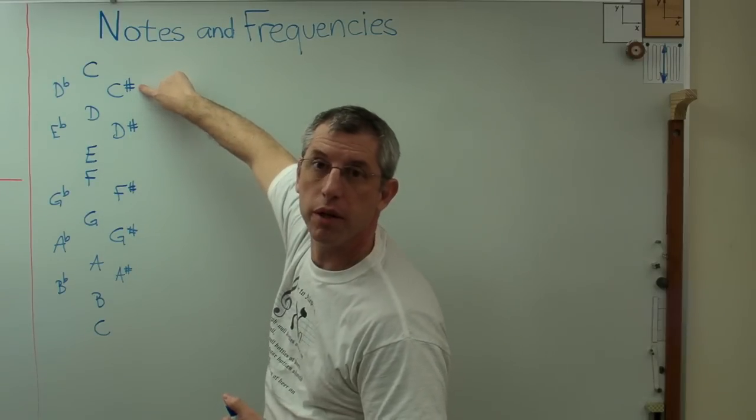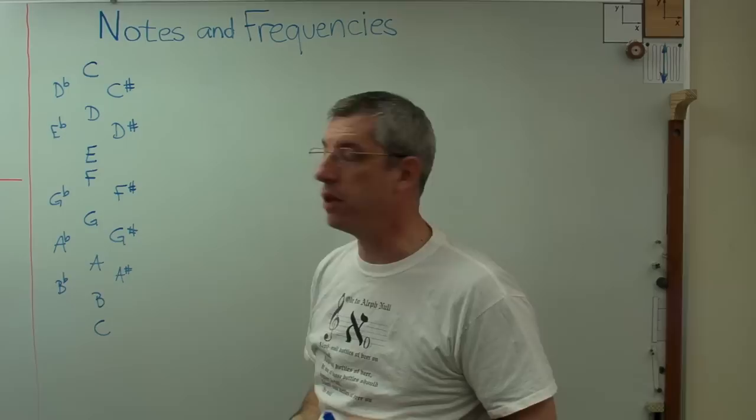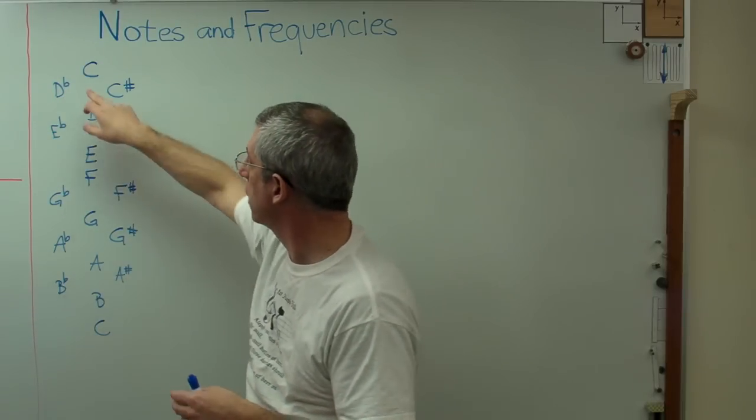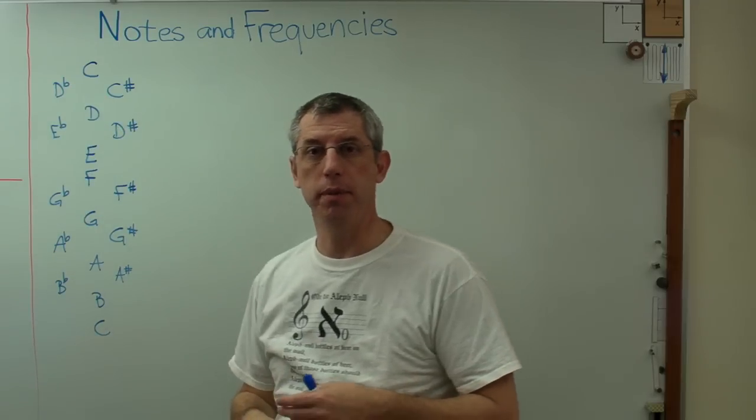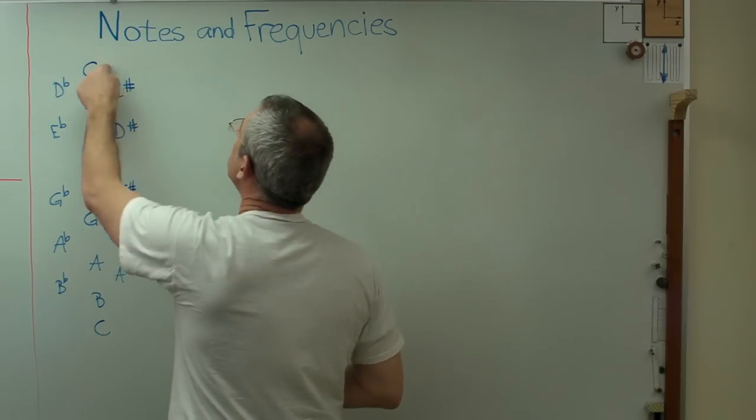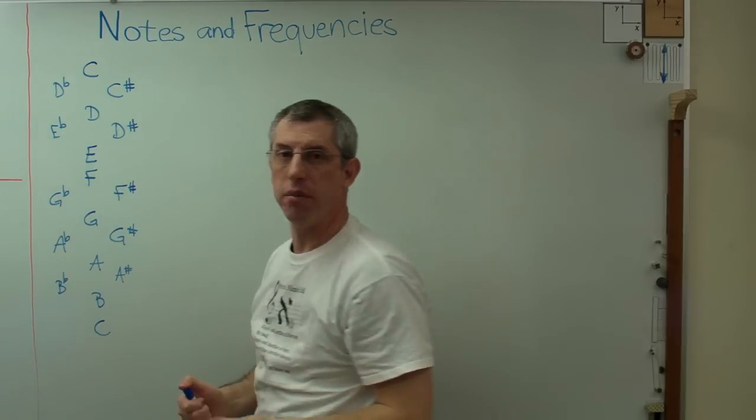There's also things called flats that have a little, looks kind of like a superscript B, and that means we've lowered the pitch a little bit. So C sharp and D flat are the same note.